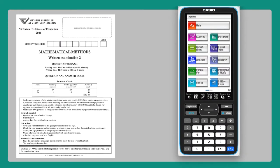This video will present solutions to the VCE 2021 Mathematical Methods Written Examination 2, Section B, Question 5.